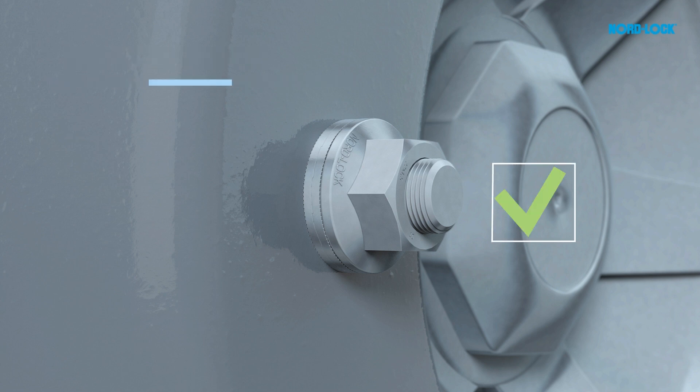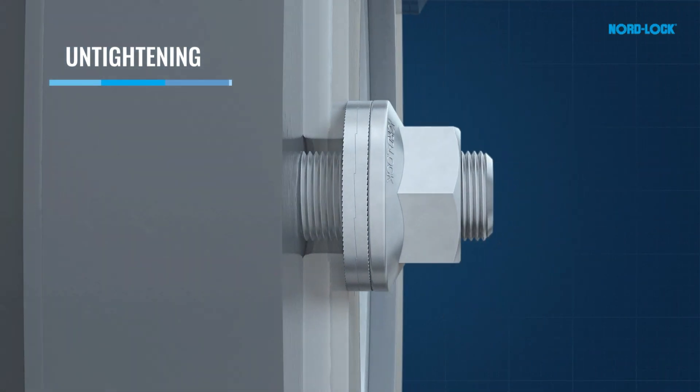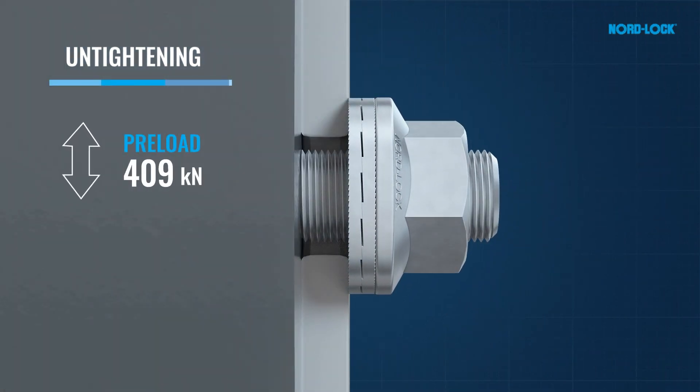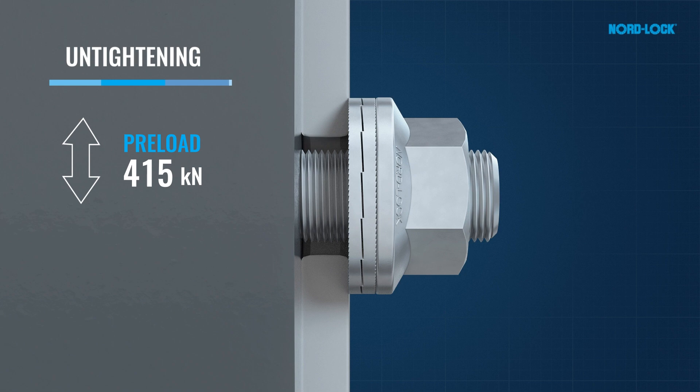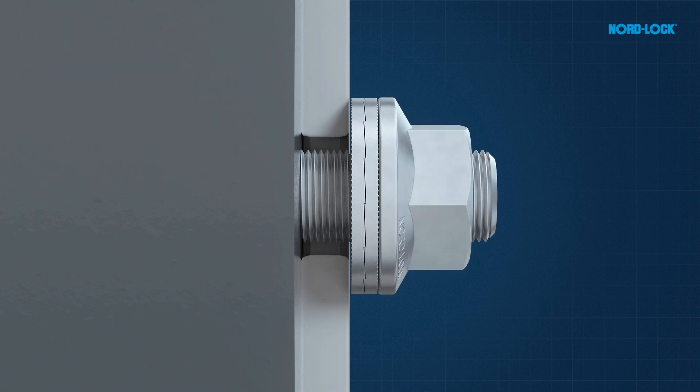The principle is shown during untightening. The cams of the top washer will override the cams of the bottom washer, stretching the bolt before the wheel nut can be completely untightened.